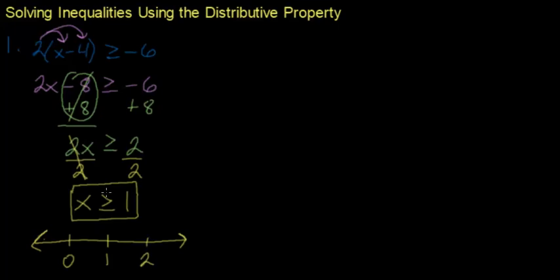Let's graph this. This is all numbers greater than or equal to one, so we are going to have a closed circle over the one and shade it to the right since it's greater than.